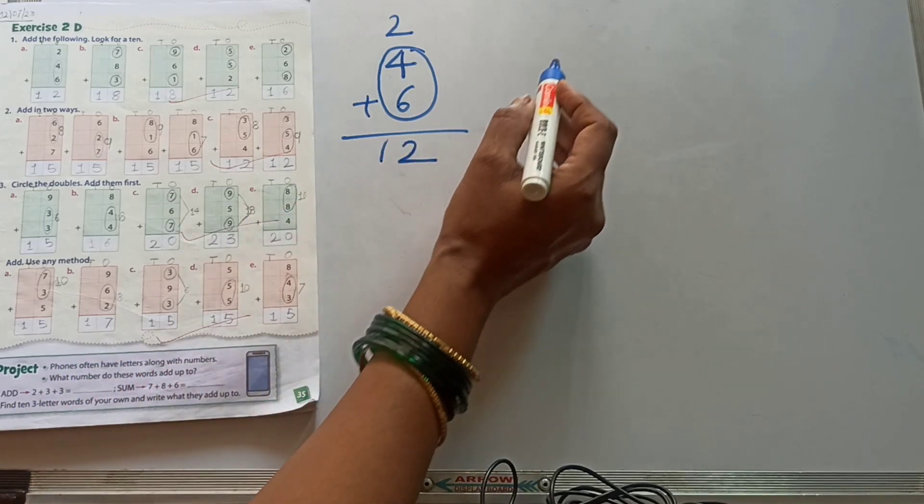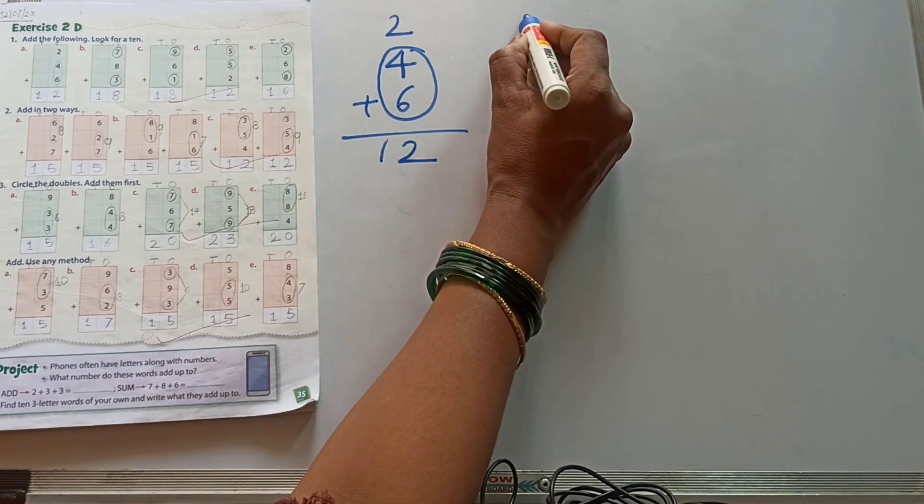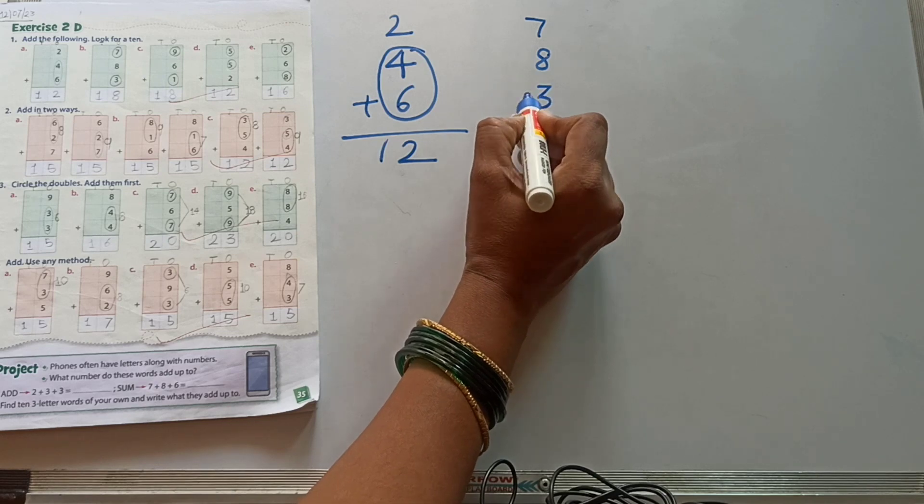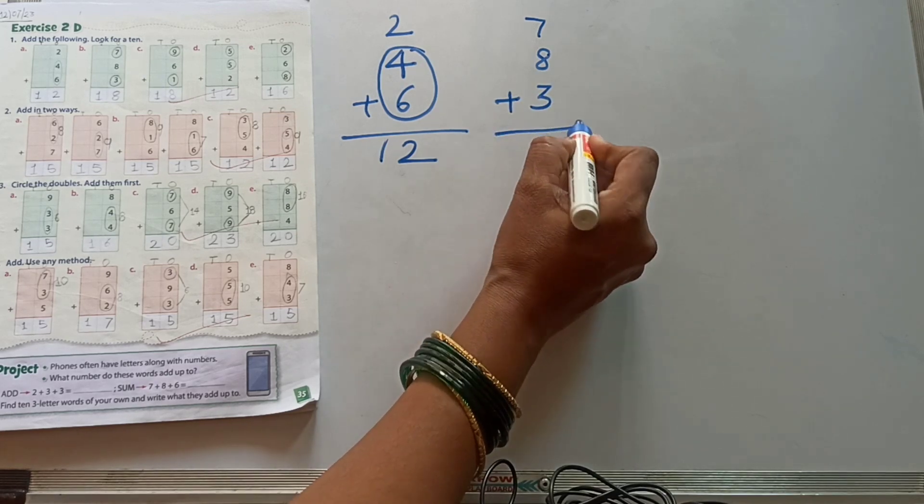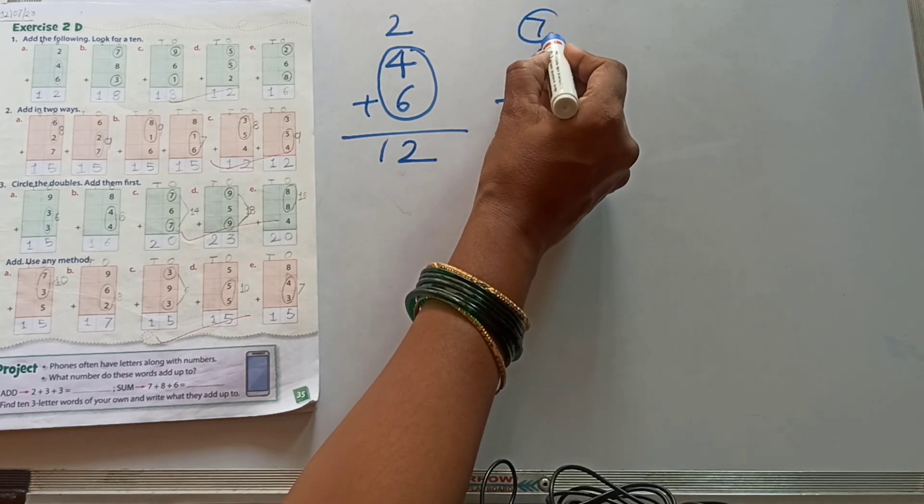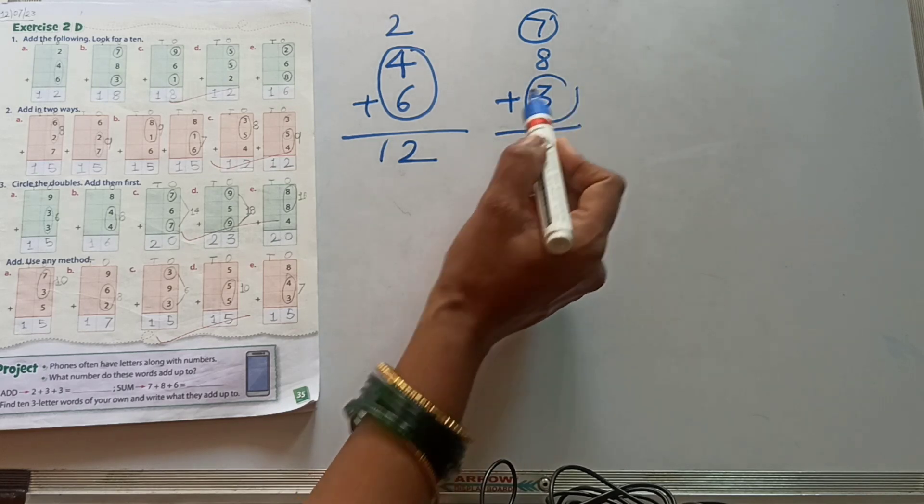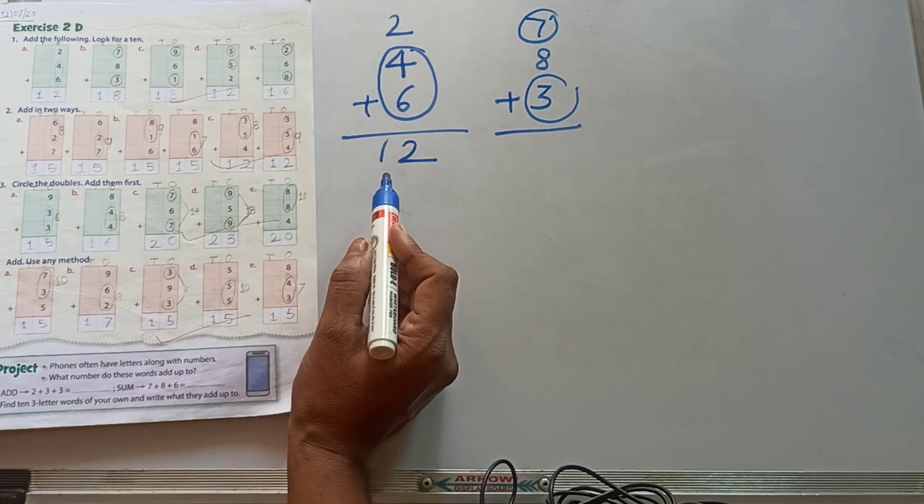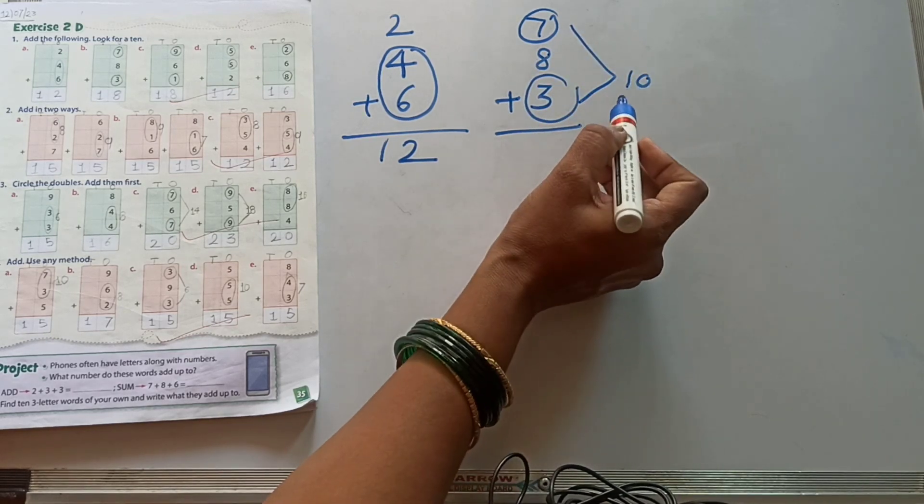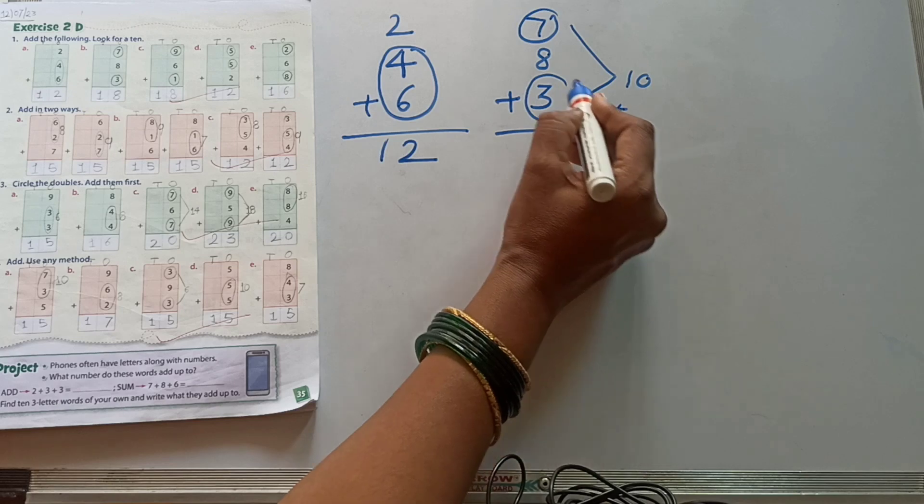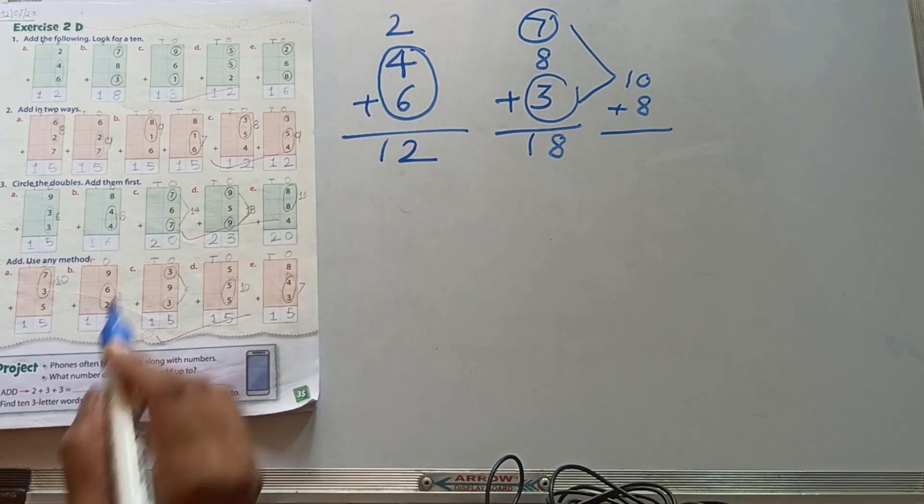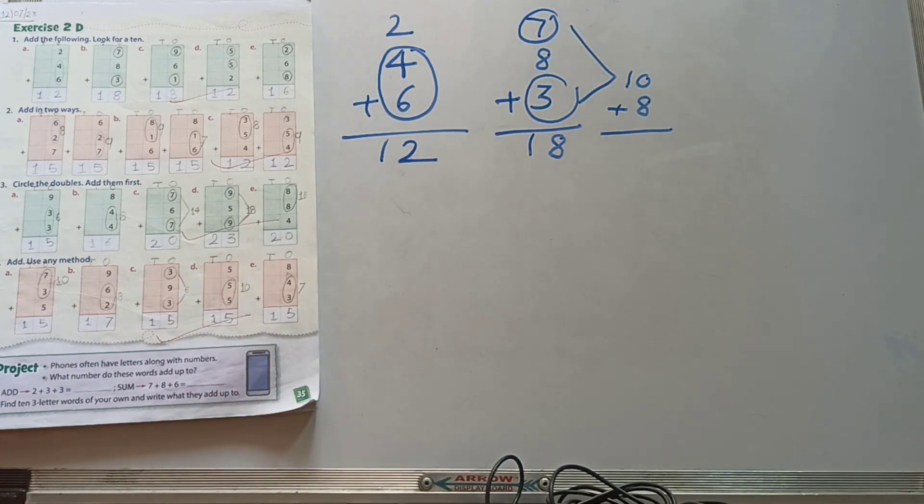Then next, 7 plus 8 plus 3. Don't forget this one plus sign. This one, 7, and this one, 3. How many? 10. And 10 plus this one, 8. 18, write here, 18. All of you understood? Very good.